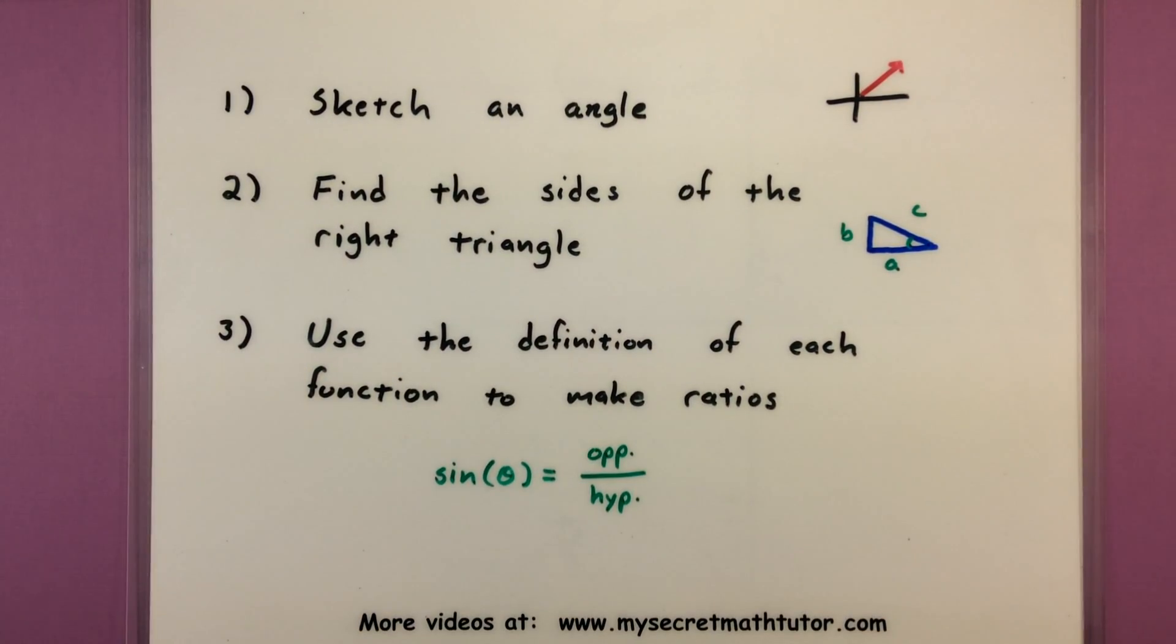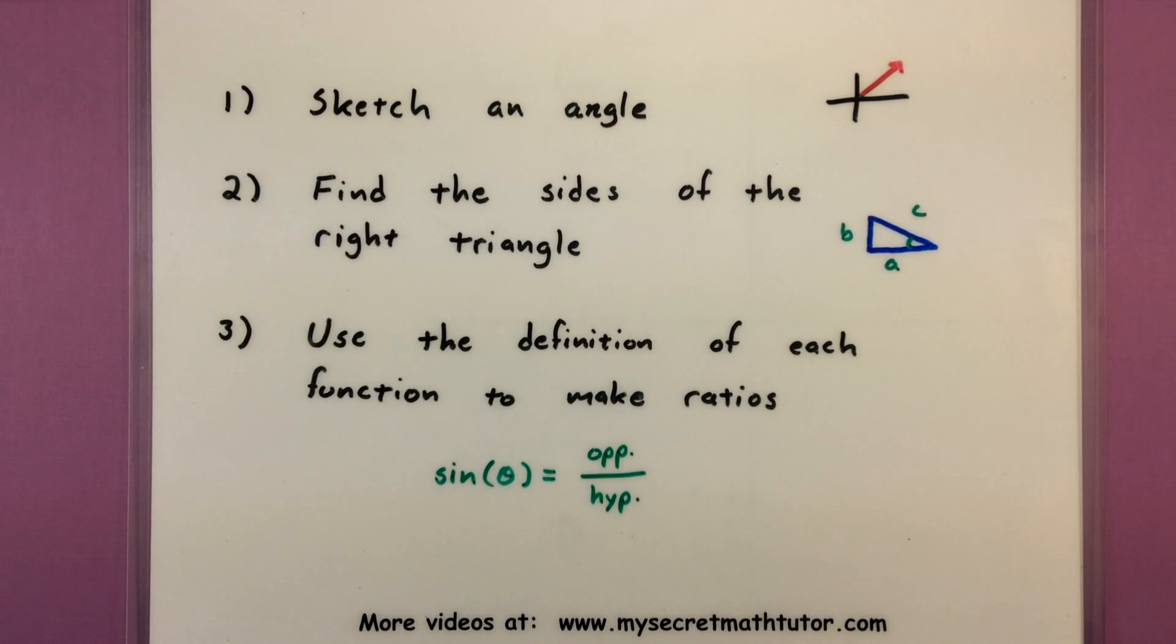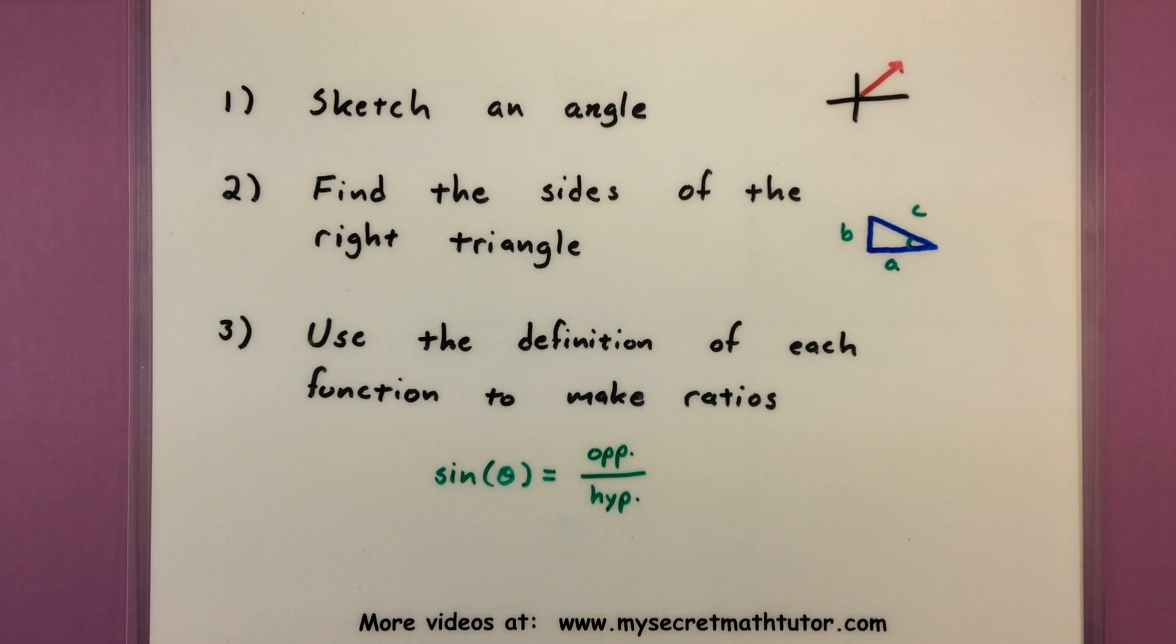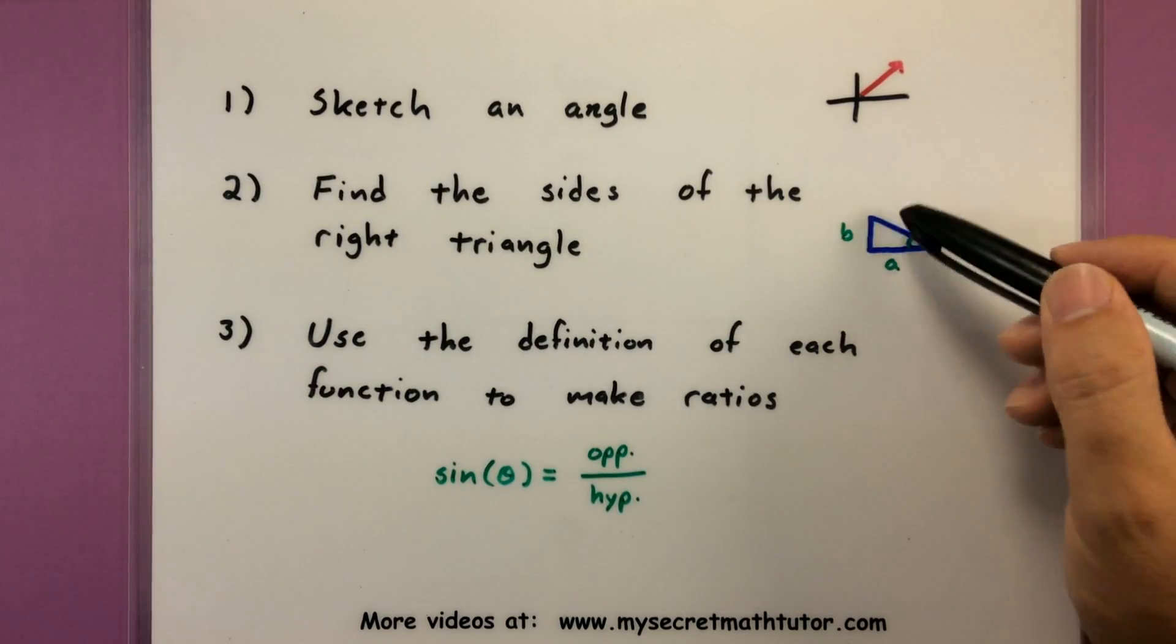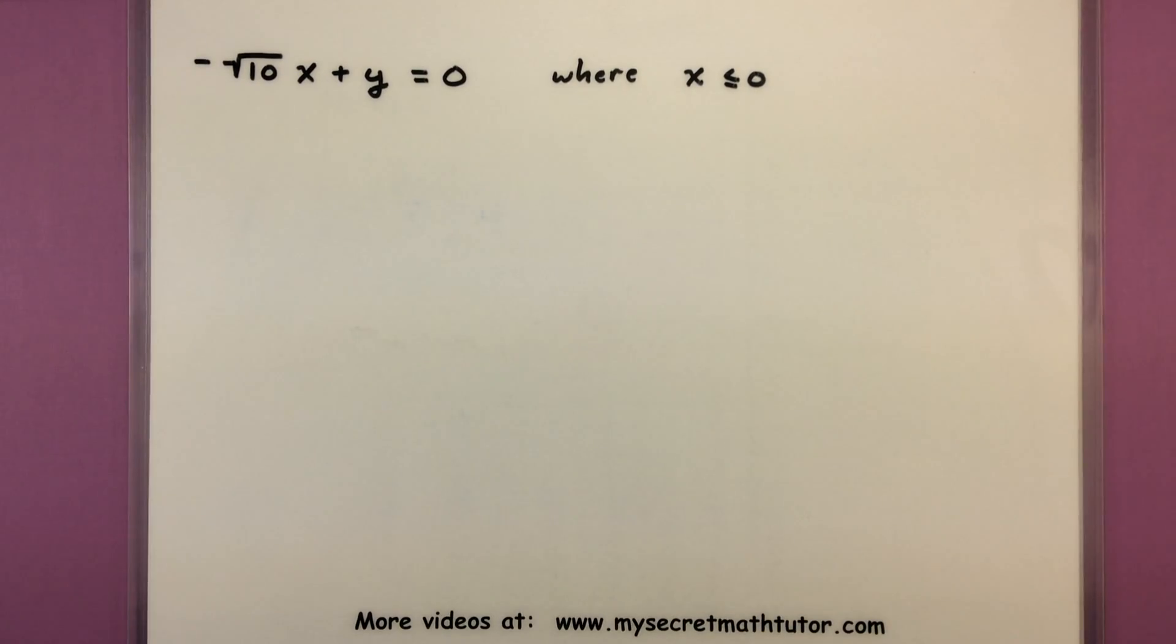The first part of this is we're just going to sketch out the angle, see exactly where it is, and we're going to have to really carefully look at the equation of the line to figure out where that angle is. Next, we'll go ahead and see what right triangle that forms in relation to the x-axis. That way we can get all of our sides. Once we have the sides, we'll go ahead and use the definition of our different trigonometric functions to make the appropriate ratios. So something like sine would simply be formed by taking the opposite side over the hypotenuse, and that will give us our value for sine. So let's get into an example so you can see exactly what I'm talking about.